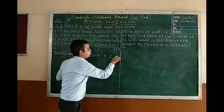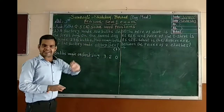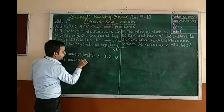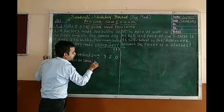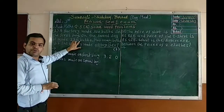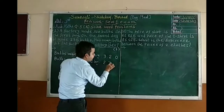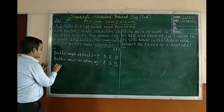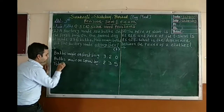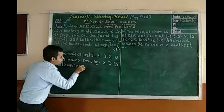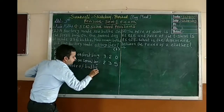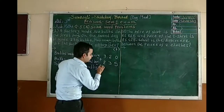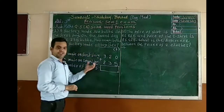So here I write 320. Then on the second day — bulbs made on the second day — how many bulbs were made on the second day? 235. So I will write 235. Now we have to find the total number of bulbs. I write: total number of bulbs. We have to do addition. Now let's do the addition of these both numbers.